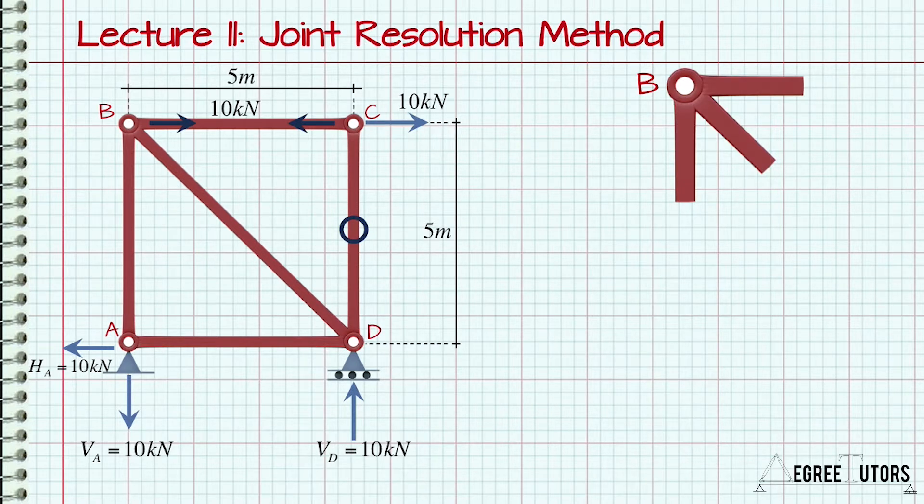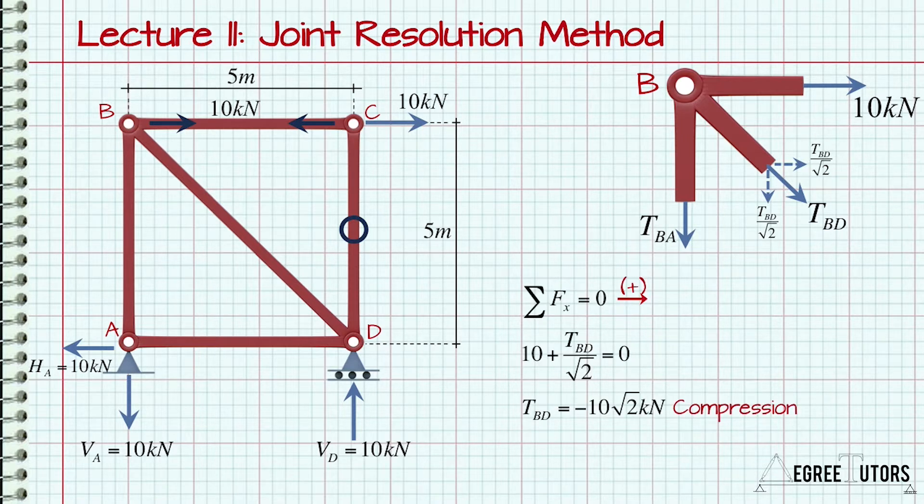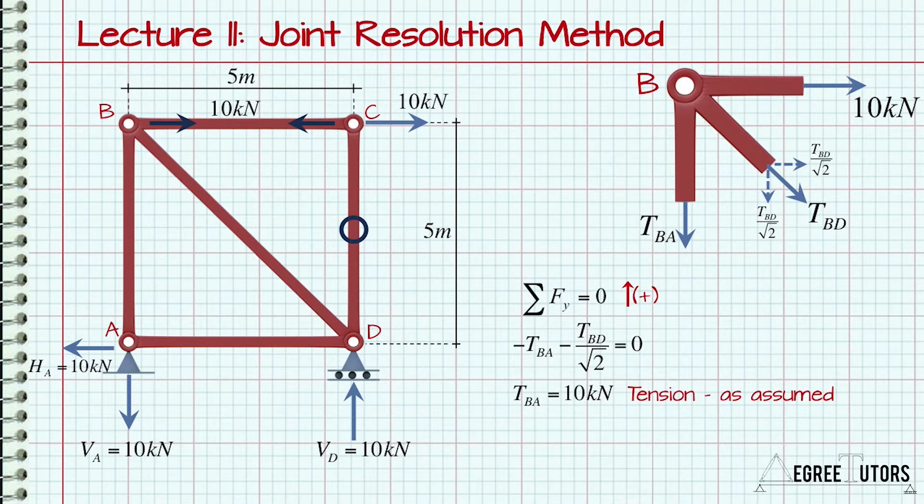Now, we can proceed to joint B as we've reduced the number of unknowns at that joint to two. The procedure is exactly the same. By cutting through the members, we've revealed the internal member forces. Any that we don't yet know, we assume to be tension until proven otherwise. With two unknowns, we can use our two force equilibrium equations to solve the joint. This gives us TBD equal to 10 root 2 kN in compression and TBA equal to 10kN in tension. Again, represent this information by drawing directly onto the structure.